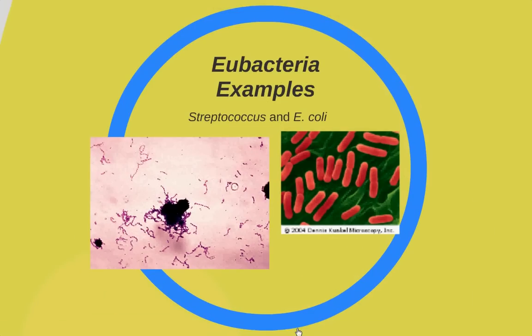Eubacteria examples include some familiar ones that cause disease. Streptococcus — if you've had strep throat, you've had streptococcus. It's shown here in purple because of a gram stain, which shows a difference in the cell wall. E. coli is over here on the right — it's found just about everywhere, but certain strains of E. coli can make you very, very sick.